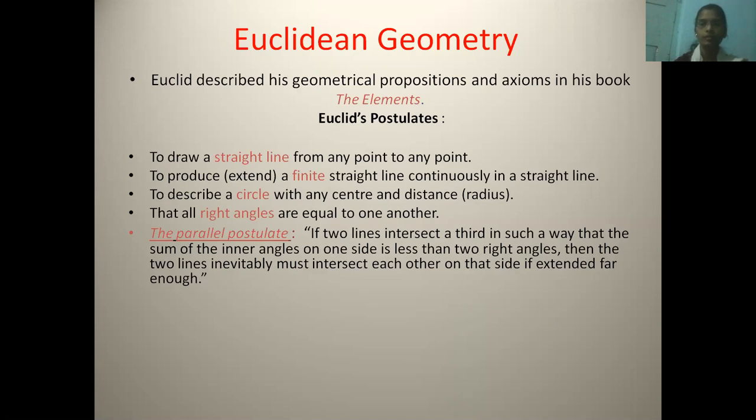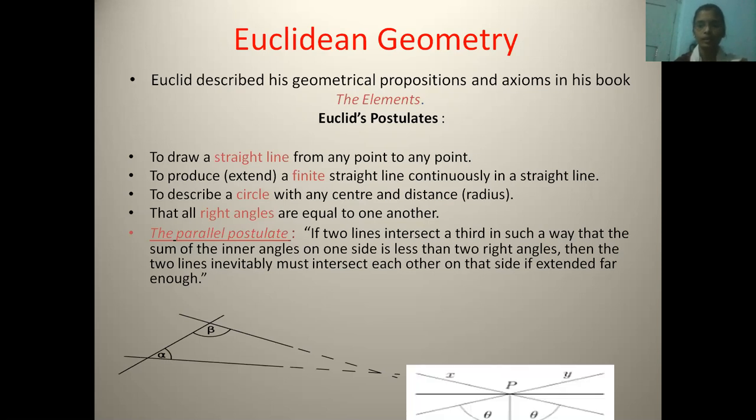Before going to the application, we must understand the Euclidean and Non-Euclidean geometry and difference between them. Euclidean geometry is mainly based on the five postulates given by Euclid. The first four postulates can be applied to the flat as well as curved surface geometry, but the fifth postulate has a limit and it only can be applied to the flat geometry. It cannot be applied to the curved geometries. And this is why the Non-Euclidean geometry arose.